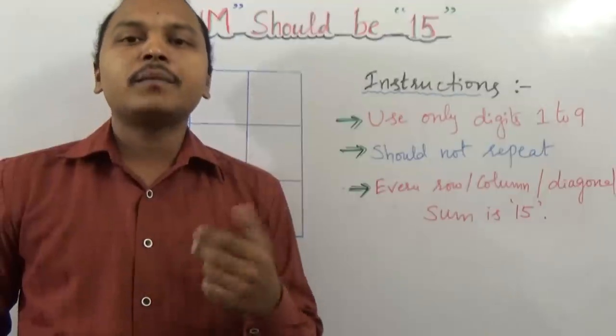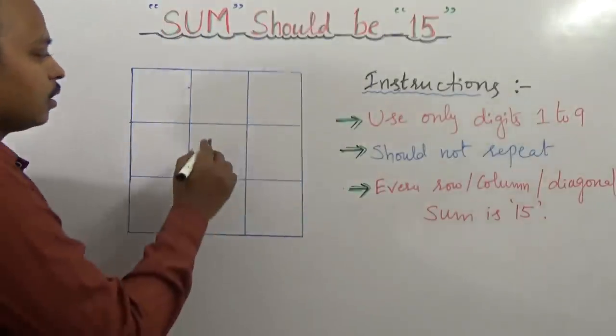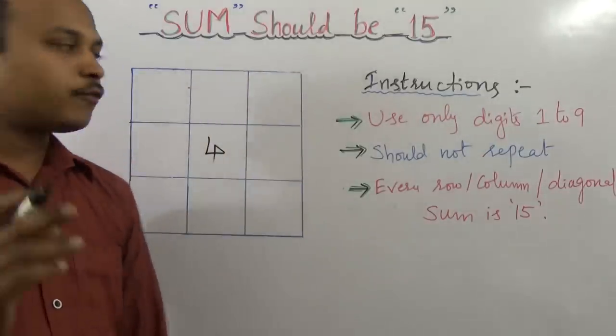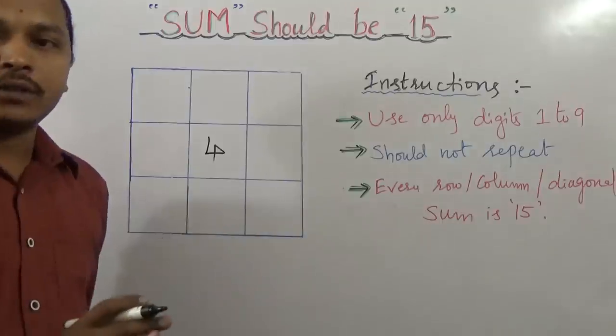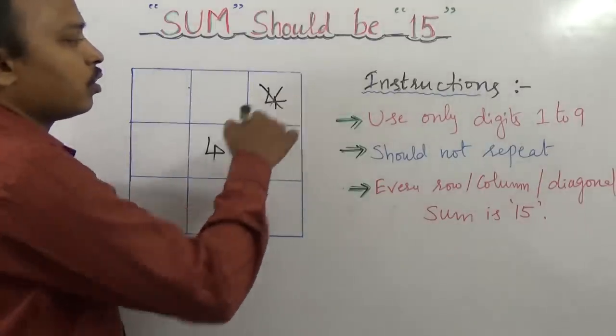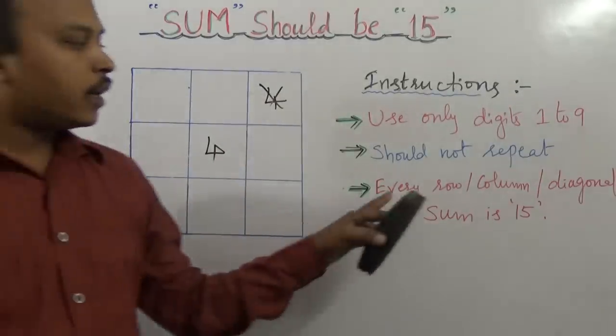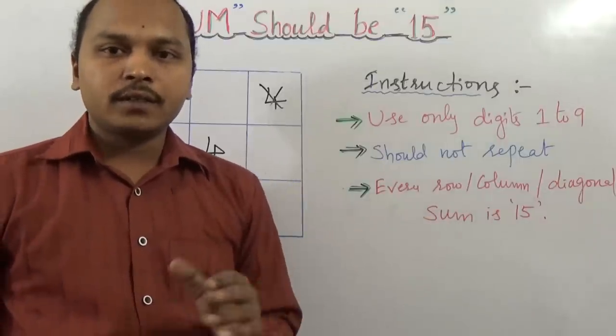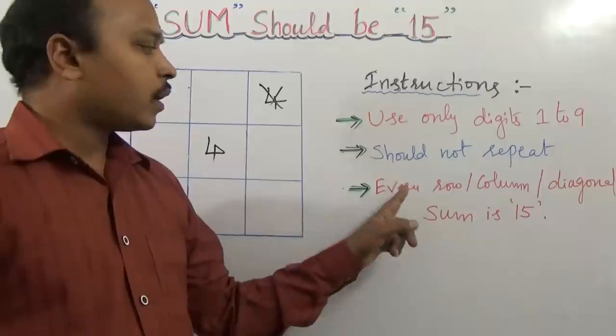For example, if I keep four in the middle of the box, again four should not be in another box. If you keep four again, that is wrong. And every row, how we have to arrange all the 1 to 9 digits, how we need to arrange.